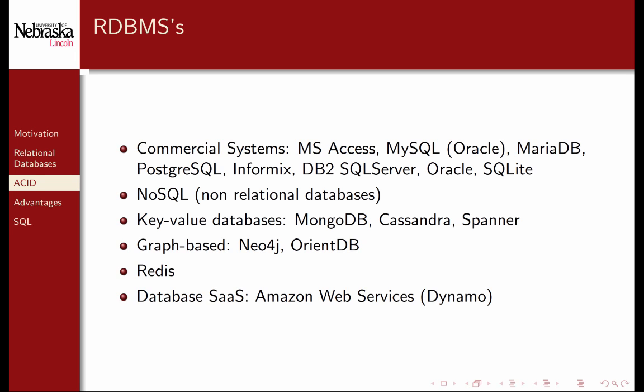There are also databases that are not based on Codd's relational database model, commonly referred to as NoSQL databases. Some are key-value pair based databases that store data not in tables, but in what are essentially associative arrays or maps. There are also graph-based databases that use graph data structures instead of tables. Redis is a database system that offers direct storage of common data structures such as lists, sets, and hash tables. There are also many companies that offer data storage and access in a Software as a Service, or SaaS, model, where you pay to use their infrastructure and API in your applications.